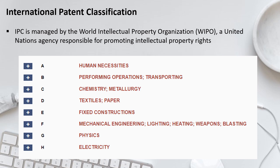In IPC, there are eight sections represented by the alphabets A to H, each denoting a specific field. For example, A denotes Human Necessities, B denotes Performing Operations and Transporting, C denotes Chemistry and Metallurgy, and so on. These are very broad categories that can be further narrowed down into more specific subcategories of patents.